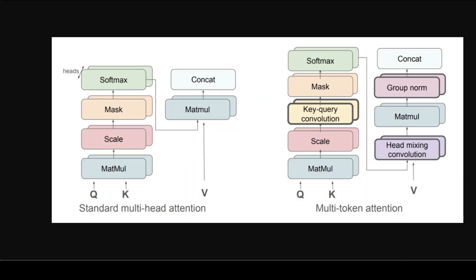This paper by Meta discusses a new method called Multi-Token Attention, or MTA. Instead of comparing just single pairs of query-key vectors independently, MTA enables the attention calculation to jointly consider groups or sequences of tokens. MTA lets queries and keys nearby in context influence one another's attention weights using convolutional operations applied across tokens and attention heads.